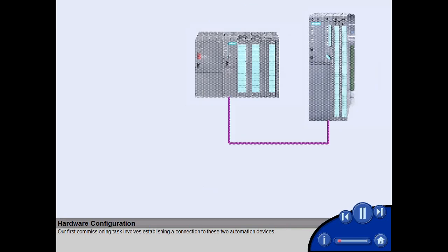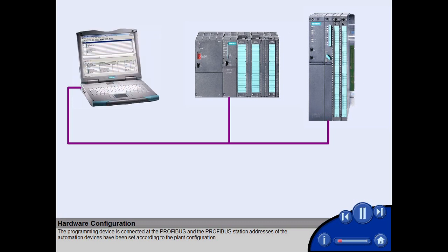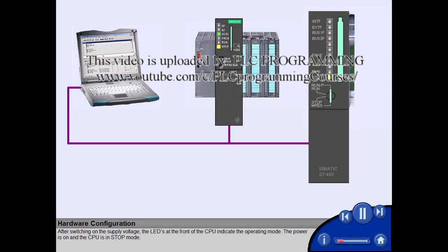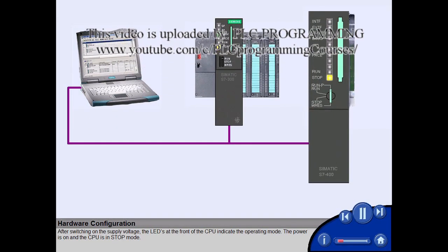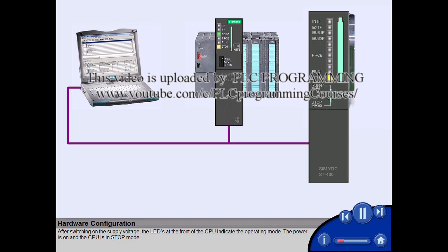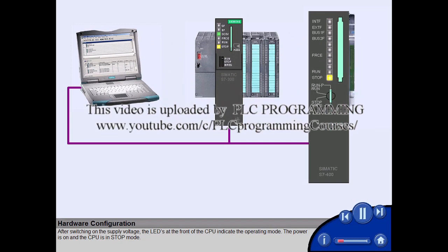Our first commissioning task involves establishing a connection to these two automation devices. The programming device is connected at the PROFIBUS, and the PROFIBUS station addresses of the automation devices have been set according to the planned configuration. After switching on the supply voltage, the LEDs at the front of the CPU indicate the operating mode.